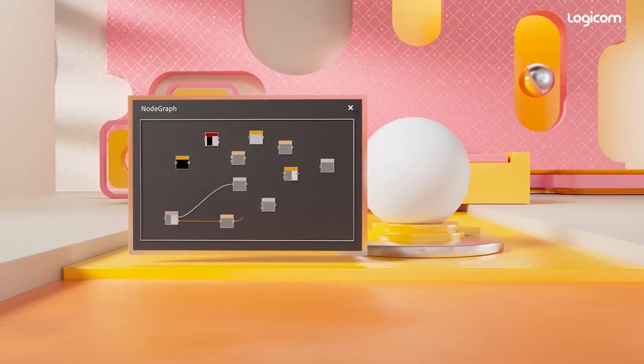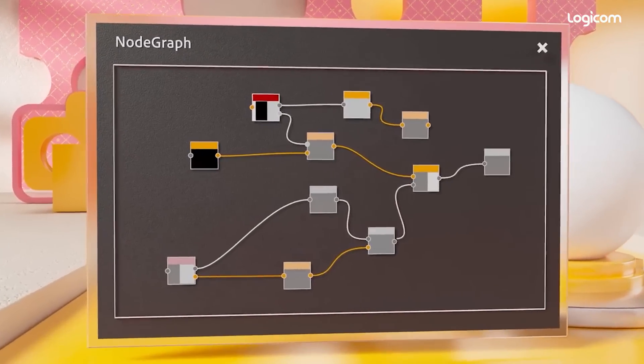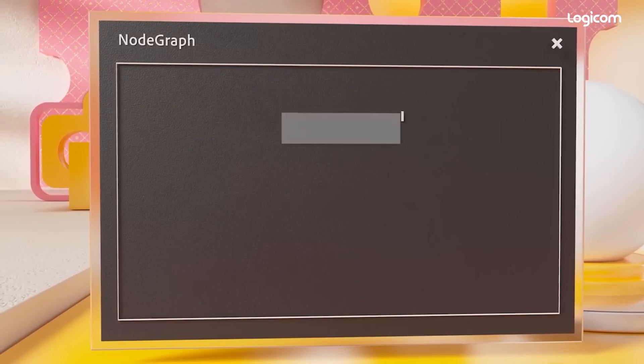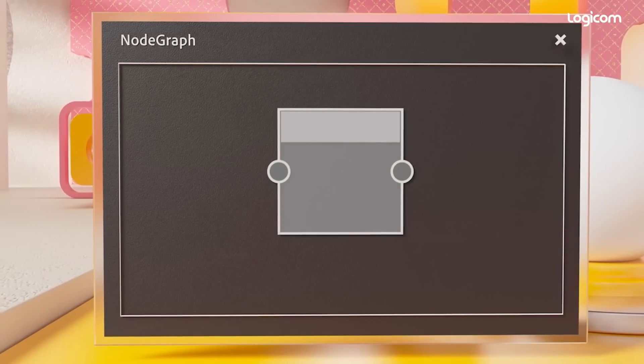Substance 3D Designer lets you unlock the full Substance ecosystem with a powerful system of graphs and nodes. The graphs you build are visual networks that represent a process for creating 3D resources. Each building block of a graph, called a node, represents a step in the process.